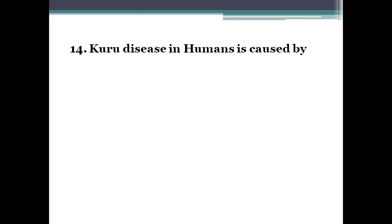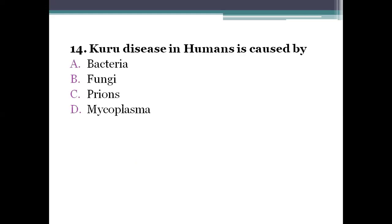Next question: Kuru disease in humans is caused by option A, bacteria. Option B, fungi. Option C, prions. Option D, mycoplasma. The right answer is prions. Kuru is caused by prions — infectious proteins without any detectable nucleic acids; they possess neither DNA nor RNA. Prions are highly resistant to physical or chemical agents and produce slow infections with long incubation periods of years. Kuru is seen only in four tribes of the eastern highlands of New Guinea, with an incubation period of 5 to 10 years.